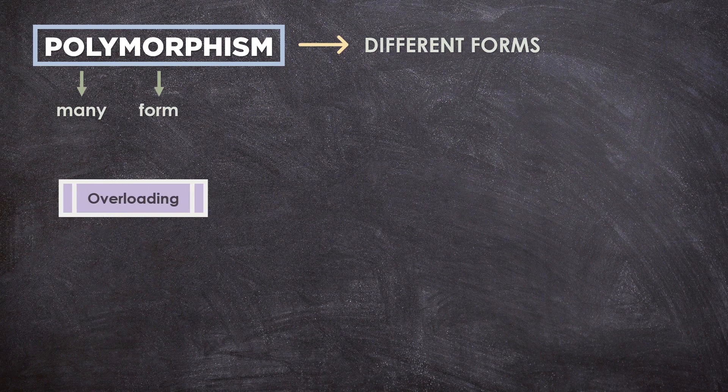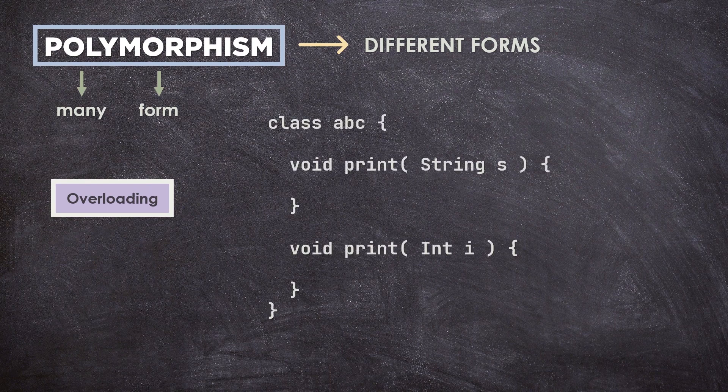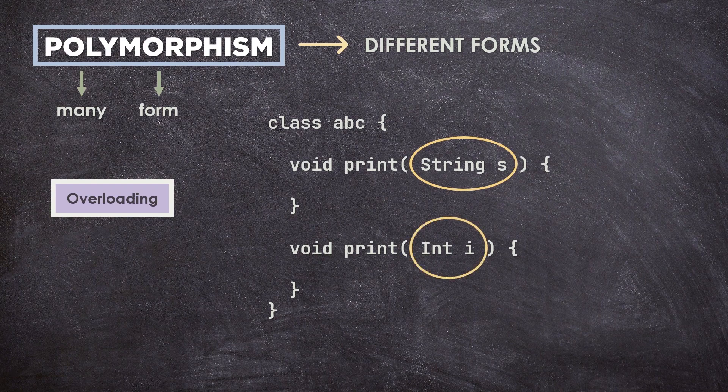In overloading, multiple methods having the same name can appear in a class but with different signatures. Signature refers to the arrangement of variables.